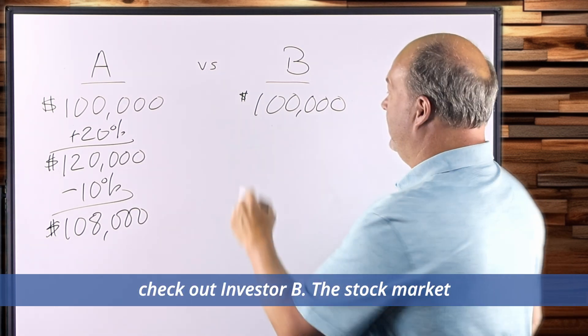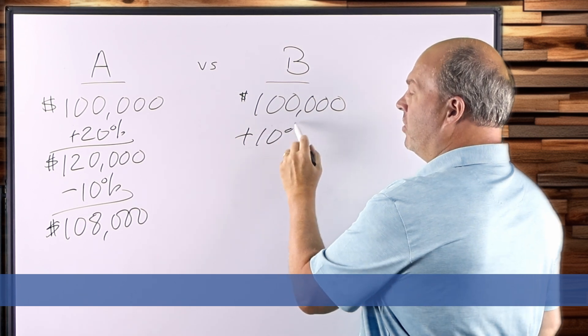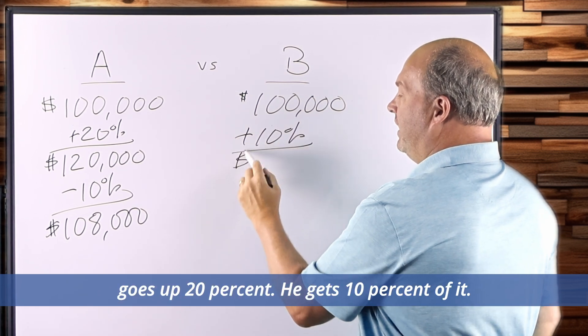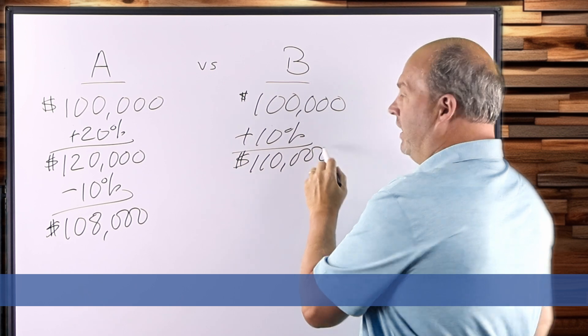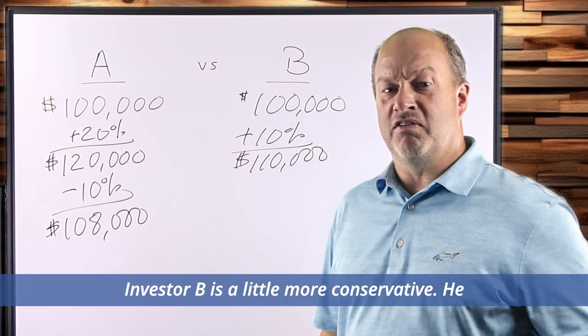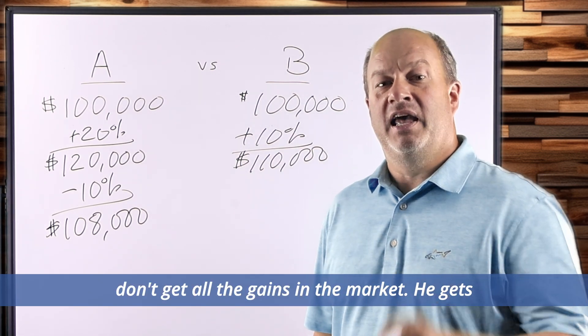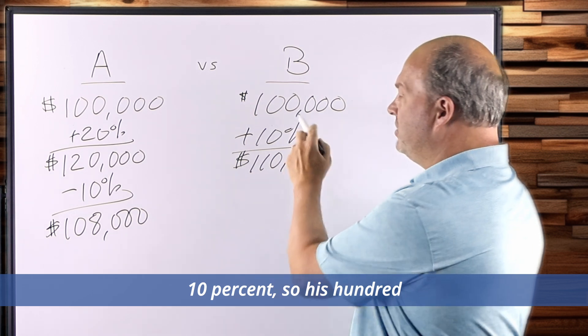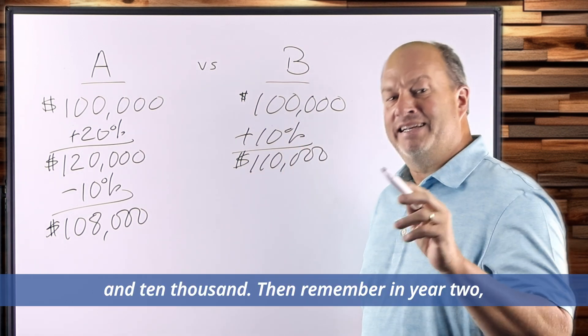Let's check out Investor B. The stock market goes up 20%. He gets 10% of it. Investor B is a little more conservative. He doesn't get all the gains in the market. He gets 10%. So his $100,000 goes to $110,000.